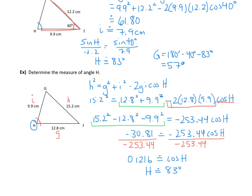Now that we have angle H, if we needed to solve the triangle completely we could use the sine law to solve for the other angles. Hopefully that all makes sense and you have an understanding of the cosine law.